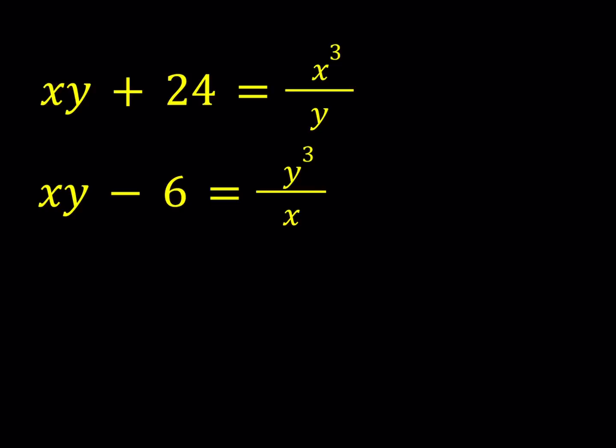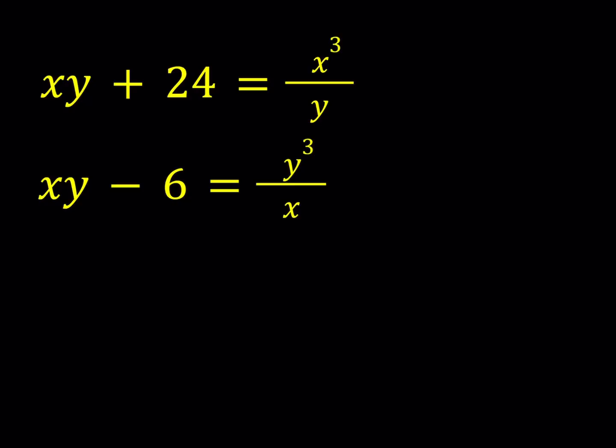One method you could use is isolate the xy and set them equal to each other. Or you could try cross multiplication. The approach I'd like to use here is a little different. I'll multiply these two equations.